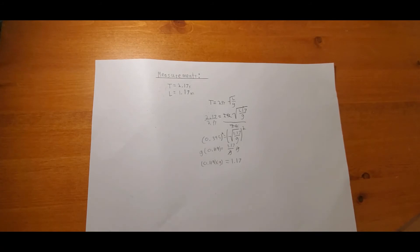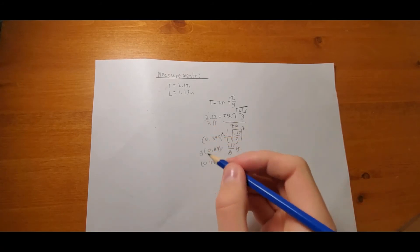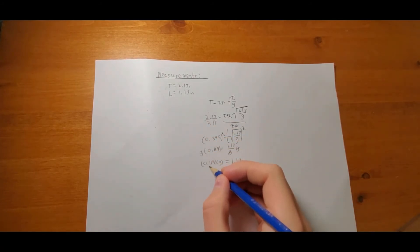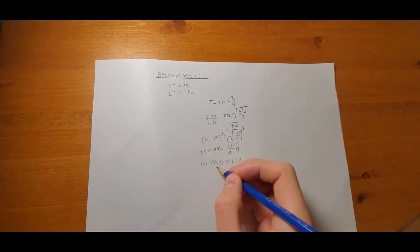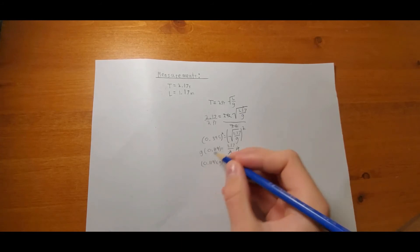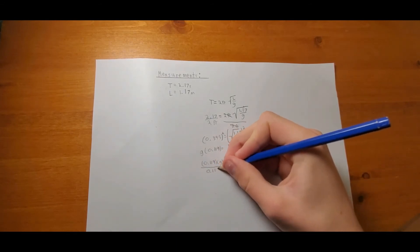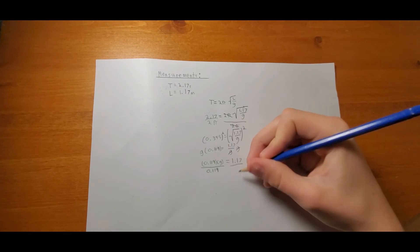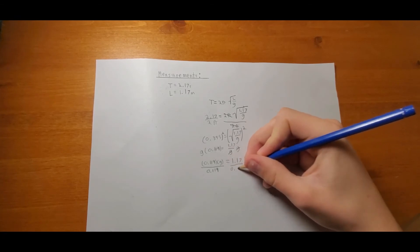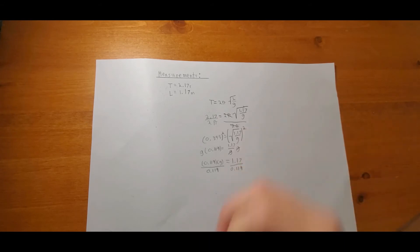Now, pretty simple from here. Now, we just divide both sides by 0.119. And we will be on our way to figuring out exactly how much gravity is. We're almost there.